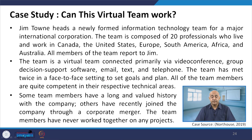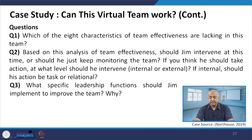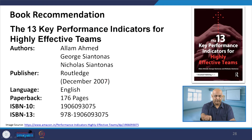There is a case study: 'Can this virtual team work?' Certain situations are given and at the end there are questions: Which of the 8 characteristics of team effectiveness are lacking in this team? Based on analysis of team effectiveness, should Jim intervene or just keep monitoring? If he should act, at what level — internal or external? If internal, should it be task or relational oriented? What specific leadership functions should Jim implement to improve the team and why?